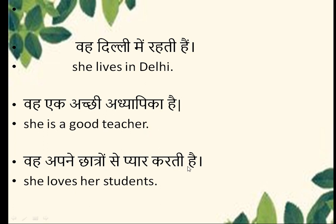Vahe apne chhatron se pyar karthi hai. 'She' is used for 'vahe.' The 's' is written with the verb because our subject is singular, so the verb must also be singular. 'Her students' — 's' is written because there are many students; possessive is shown here, and since it refers to a girl, 'her' is used. If it were 'he,' we would use 'his.' So the complete sentence will be: She loves her students.